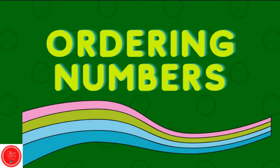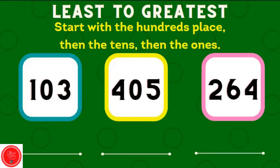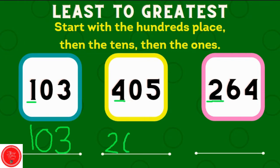Let's talk about ordering numbers. Least to greatest — start with the hundreds place, then go to the tens and then to the ones. So we're going to put these numbers in order from least to greatest. Let's look at the hundreds place first. We have a one, a four, and a two. One is smaller, so 103 goes first. Then 264. And then the greatest number, 405.